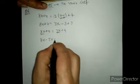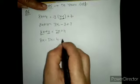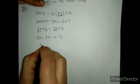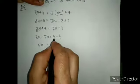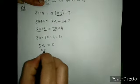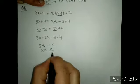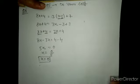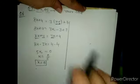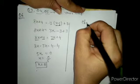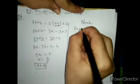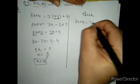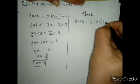3x comes to the left side and becomes minus 3x. The plus 4 on the right goes to the left and becomes minus 4. So 8x minus 3x equals 4 minus 4, giving 5x equals 0. Therefore the value of x is 0. Now we have to check this value.